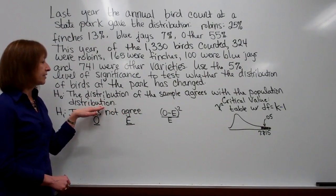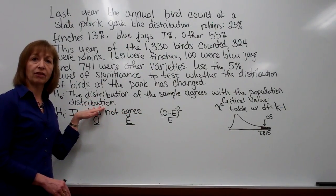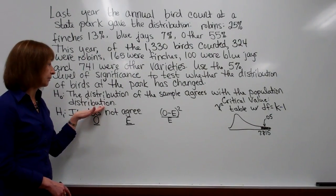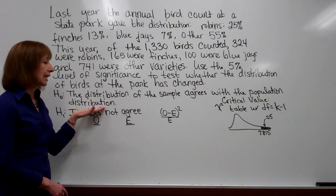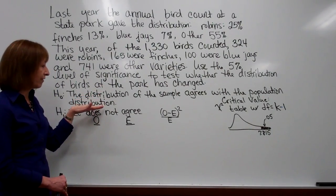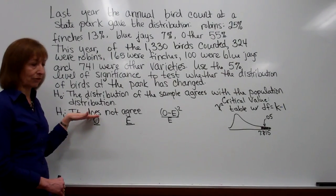So if we do not have sufficient evidence to reject the null, then we have to say that the distribution of the sample does agree with the population. If we can reject the null, then we have sufficient evidence to say that it does not agree.